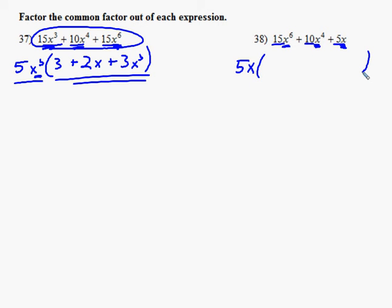And then we're going to see what multiplies to get this. So 5x times what gives 15x to the sixth? Well, to get 15, we need 5 times 3. To get x to the sixth, we need an x times an x to the fifth. And that would give x to the sixth.